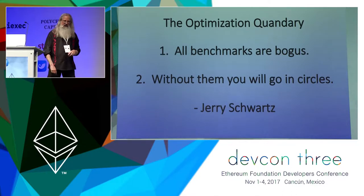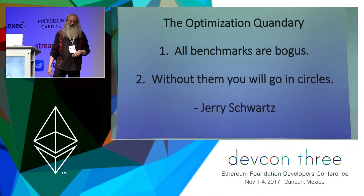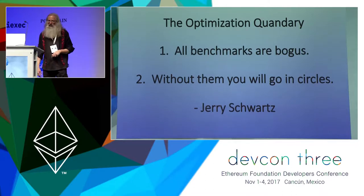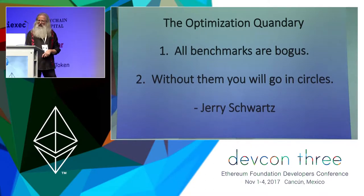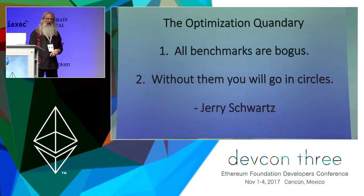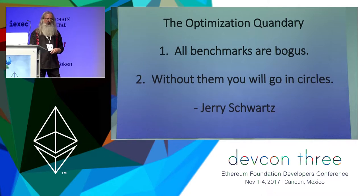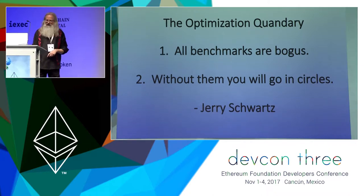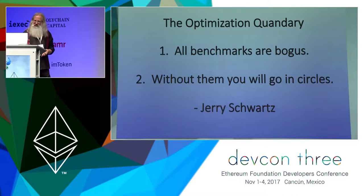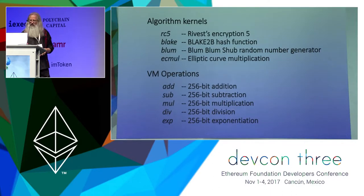The first problem you run into in any sort of optimization work, according to my old friend Jerry Schwartz, is: one, all benchmarks are bogus. You'll never have a set of benchmarks that actually represents the real world. But if you don't have benchmarks, you will just go in circles and never make progress.